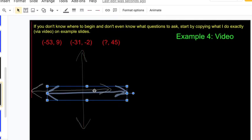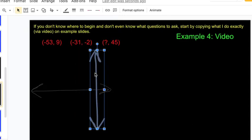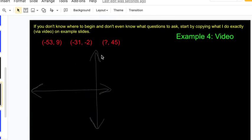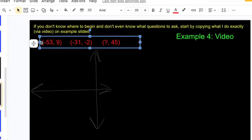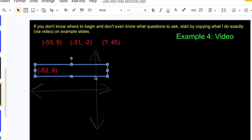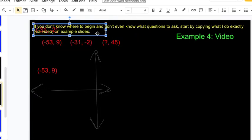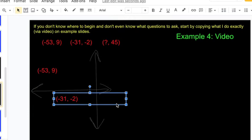We're using a lot of x territory. So we got negative fifty-three, nine - it's gonna be in our second quadrant. We got negative thirty-one, negative two - it's gonna be in our third quadrant.